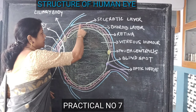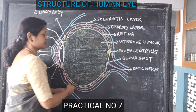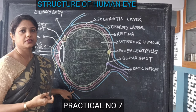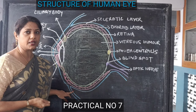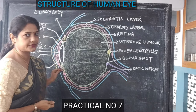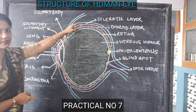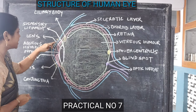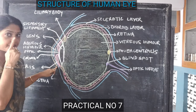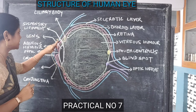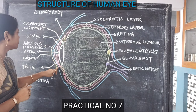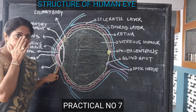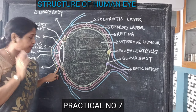The outermost part is the sclera. It is white in color, made of fibrous tissue. In the front part of the eye, this sclerotic layer, or the sclera, becomes a transparent layer which is called the cornea. The cornea covers the whole front part of the eye and is transparent.